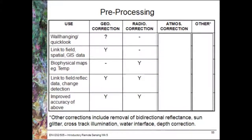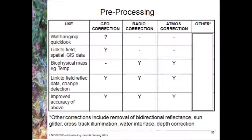To create biophysical information maps, link to field reflectance data, or for any improved accuracy, then yes, you need to perform radiometric correction. The same goes for atmospheric correction — it doesn't need to be done for creating a wall hanging or a quick look, or just to link with field spatial GIS data.